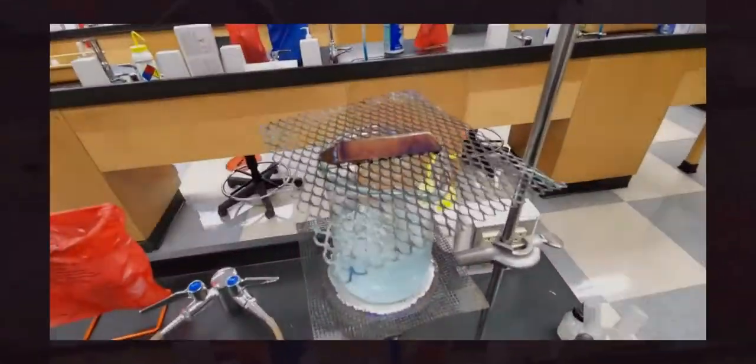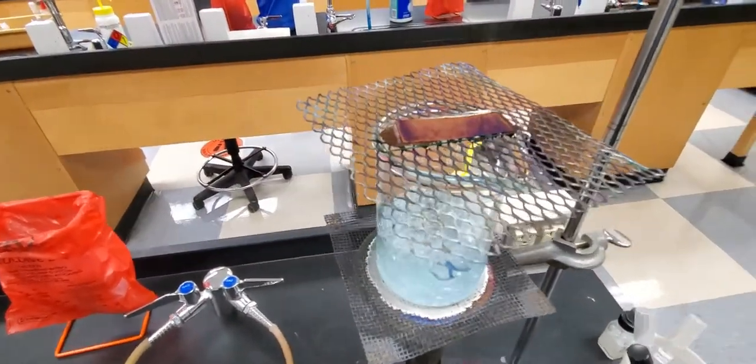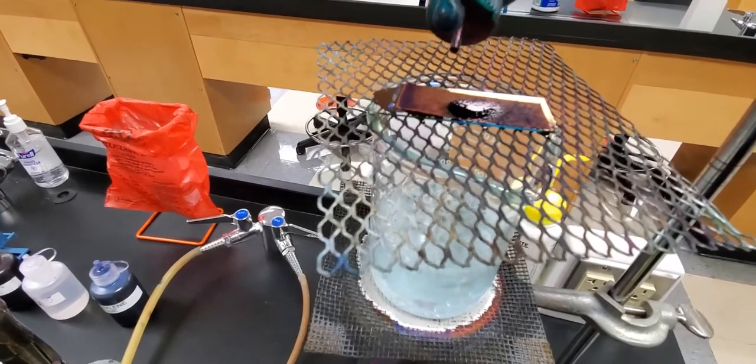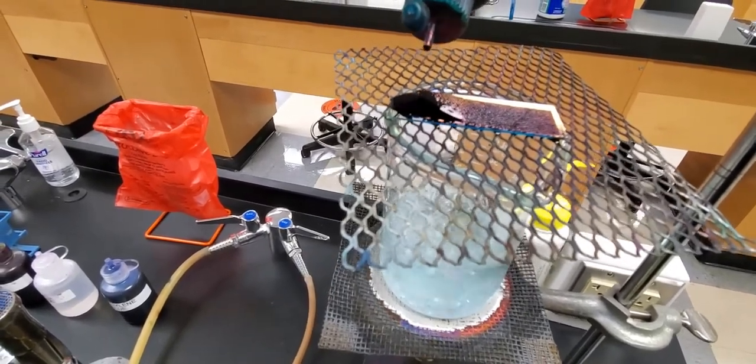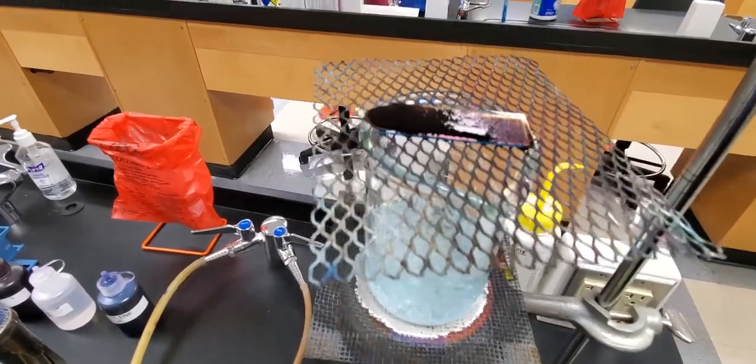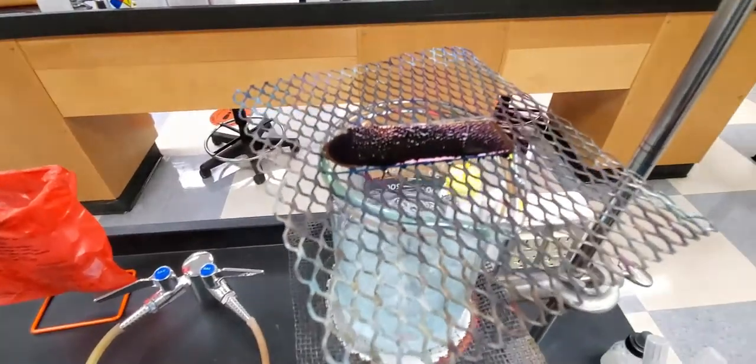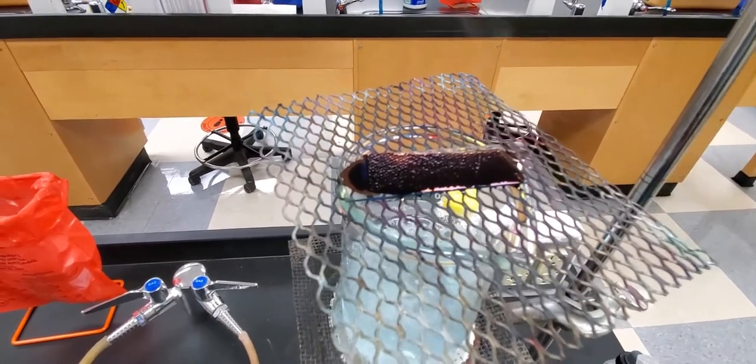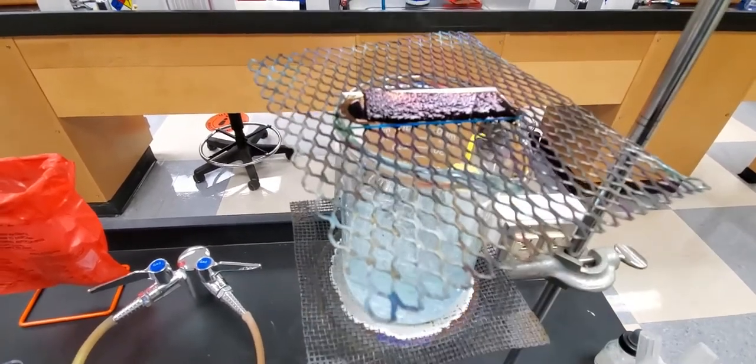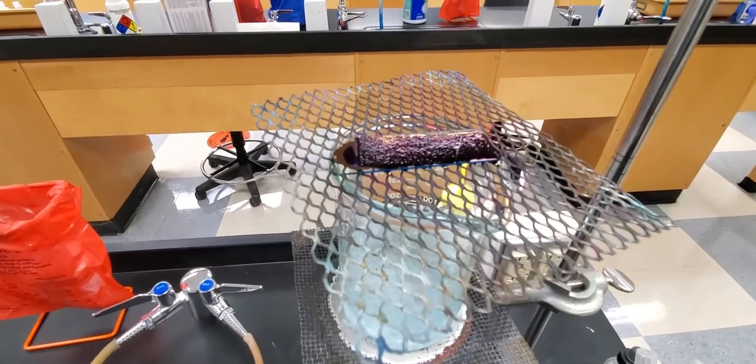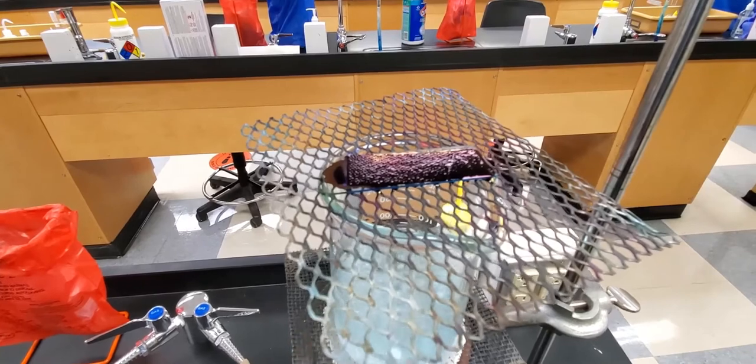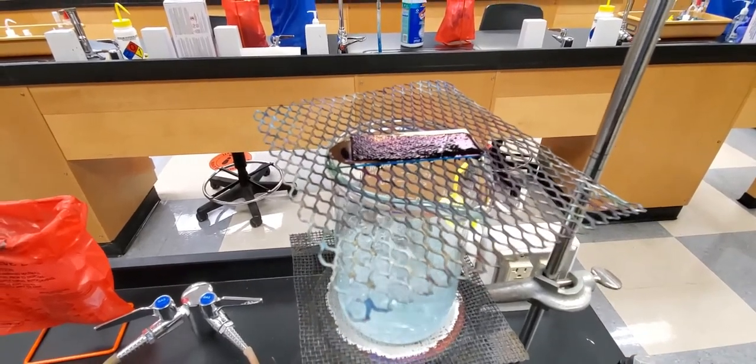You can see that our endospore stain is starting to dry out a little bit on top so we apply a little bit more of that dye. That paper towel again helps to keep it moist. We just want to keep adding that over this time period. It's been about a little over five minutes at this point. We want to make sure that we keep administering that dye to allow those cells to stain.